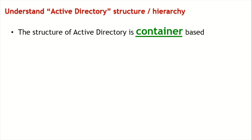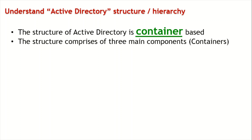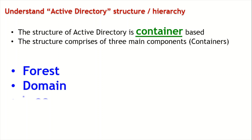Everything in the world of Active Directory is a container. There is a container and we have objects inside those containers. The structure comprises of three main components, or you can say containers: forest, domain, and a tree. These are the three main containers or components of our Active Directory. Let's look at each container one by one.